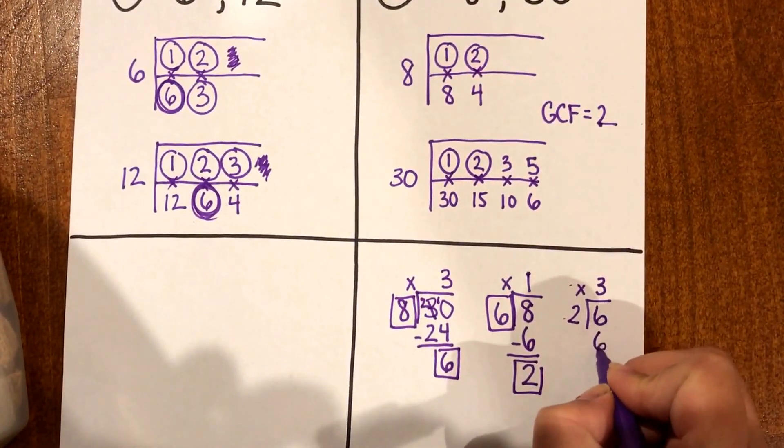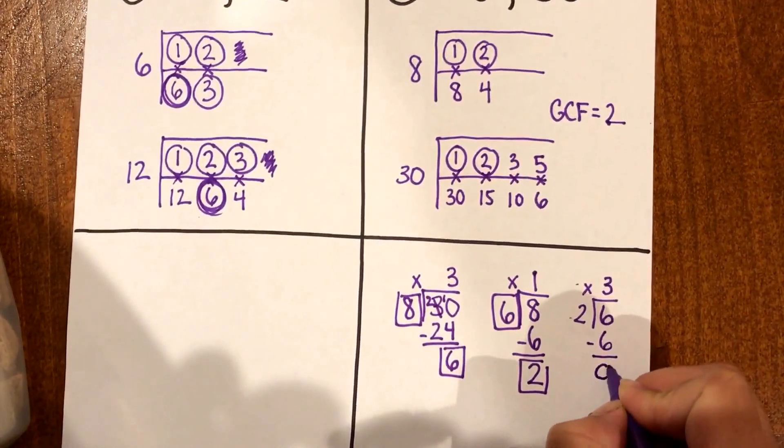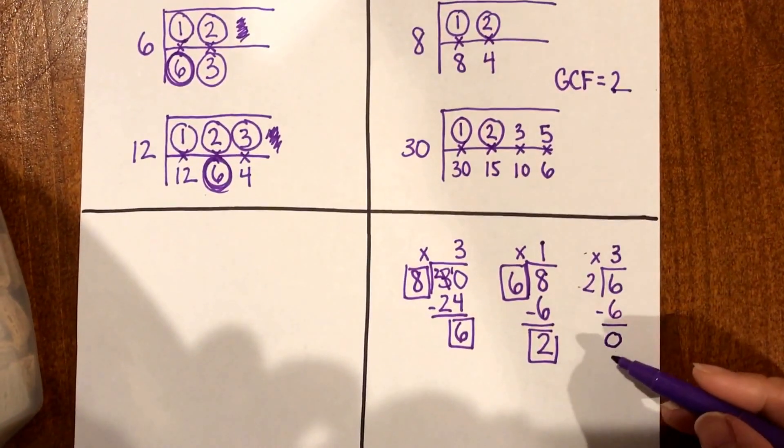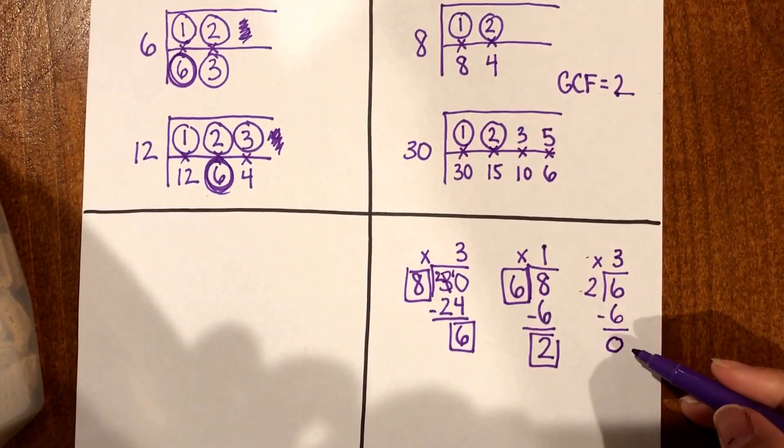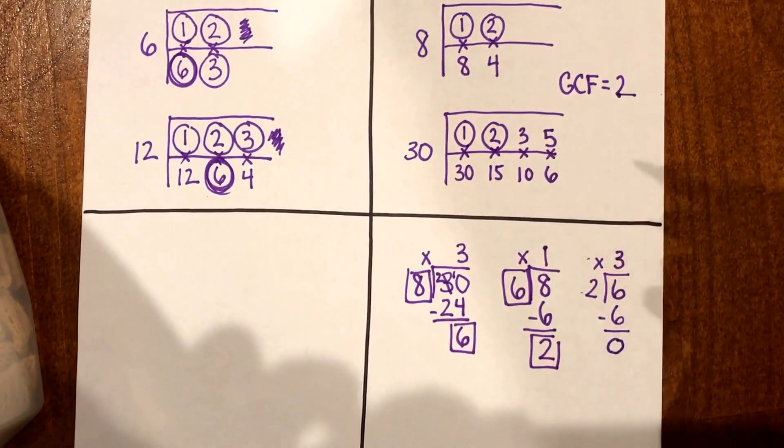Now 2 times 3 I know is gonna give me 6 or 6 divided by 2 is 3. So 3 times 2 is 6 with a remainder of 0. So now that I have 0 as my remainder I don't have to divide anymore because I don't have a remainder left.